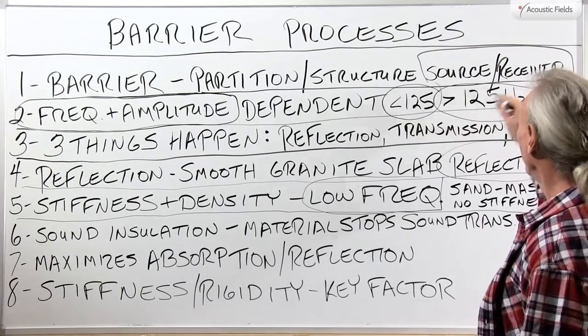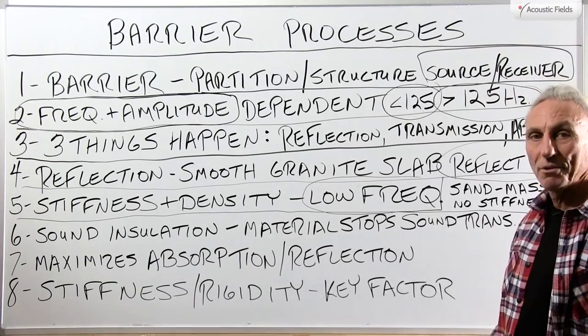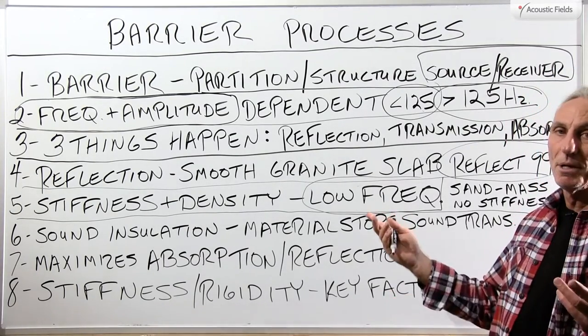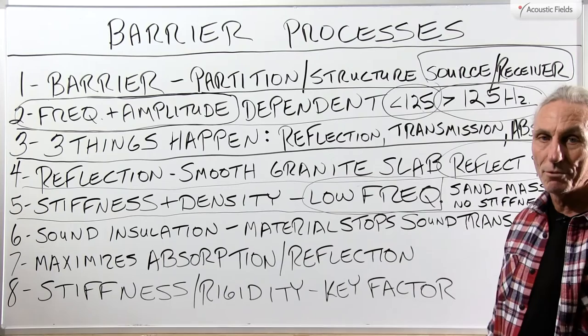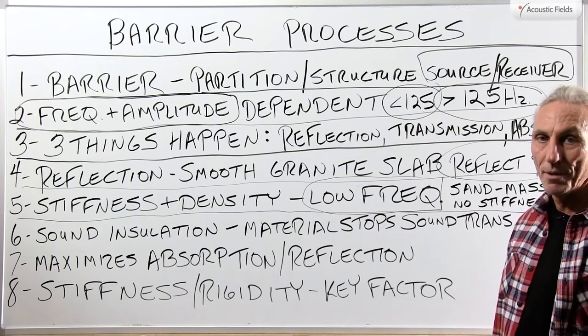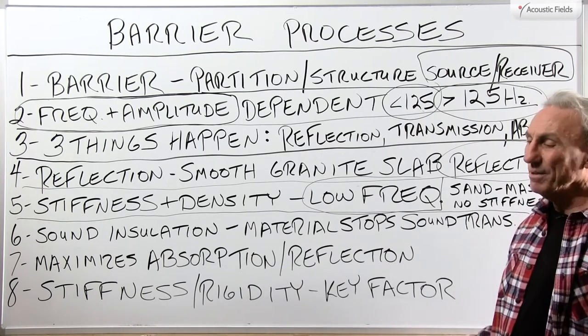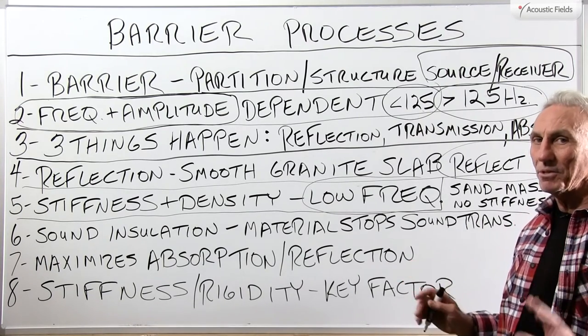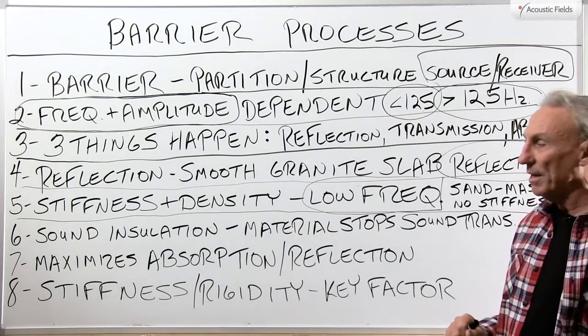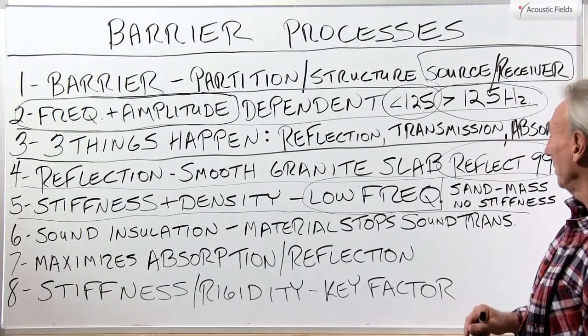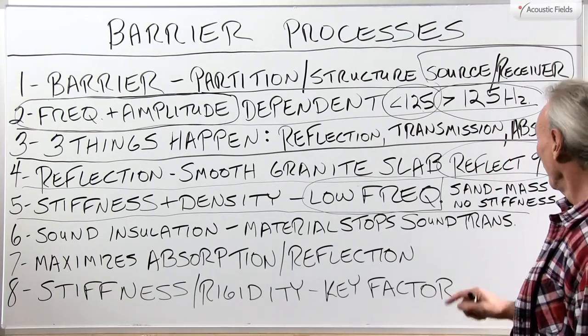Above 125 cycles, the common one you see in all the literature is the double 2x4 drywall with a little air space. There are much better ways to do it these days, but that's the most common that we see in the literature.